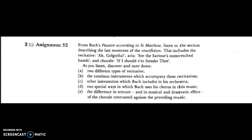For assignment 32, you have to listen to the Passion according to St. Matthew and listen to the section describing the last moments of the crucifixion. This includes the recitative, the aria 'See the Saviour's outstretched hands', and the chorale 'If I Should Ever Forsake Thee'. As you listen, you have to discover and note down two different types of recitatives, the continuo instruments accompanying them, other instruments Bach includes in his orchestra, and two special ways in which Bach uses his chorus in this music.